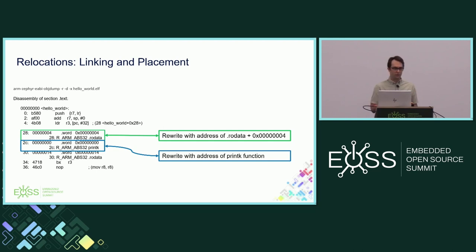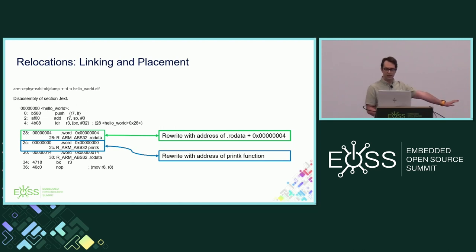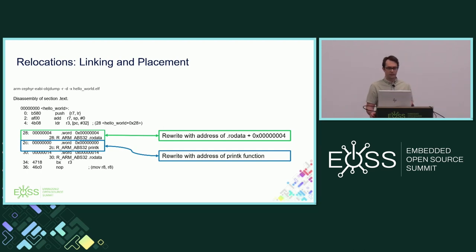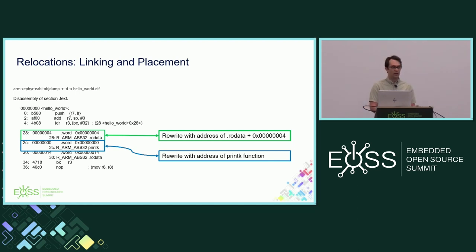Relocations allow you to place .text anywhere in memory. Your executable code needs to know where to find things — variables in your .data or RO data section, and functions not yet defined within itself. So we get relocations like this in a basic hello world extension: an RO data address to the string we want to print, and an undefined reference to a symbol, printk. When we load this extension, we need to look at the ELF, see these relocations, and rewrite them with the actual addresses of these things.